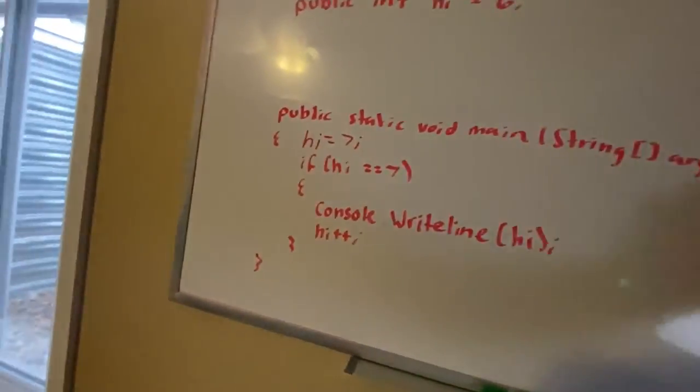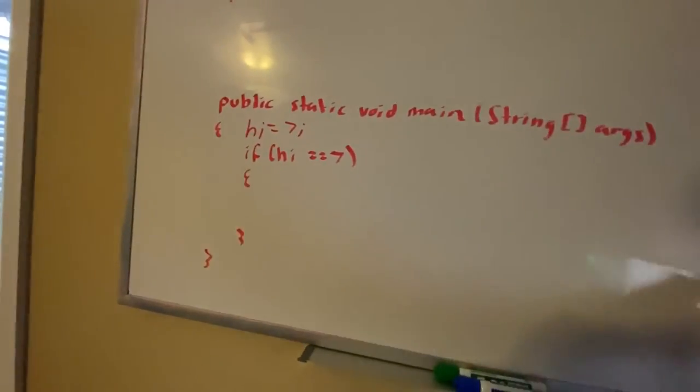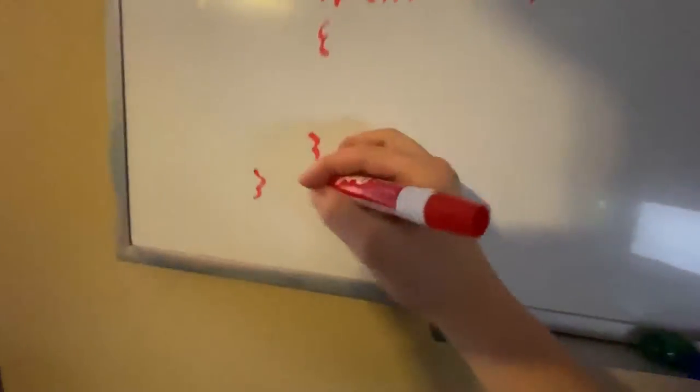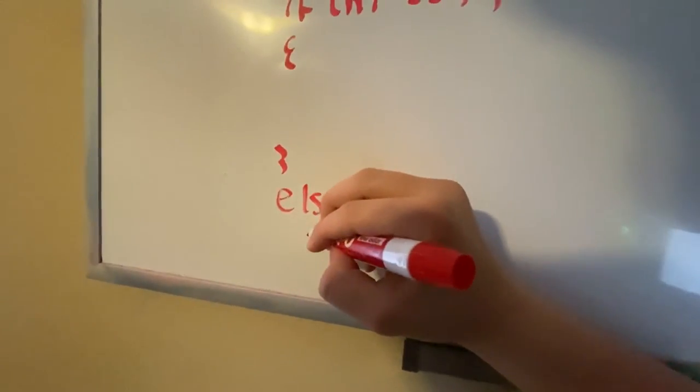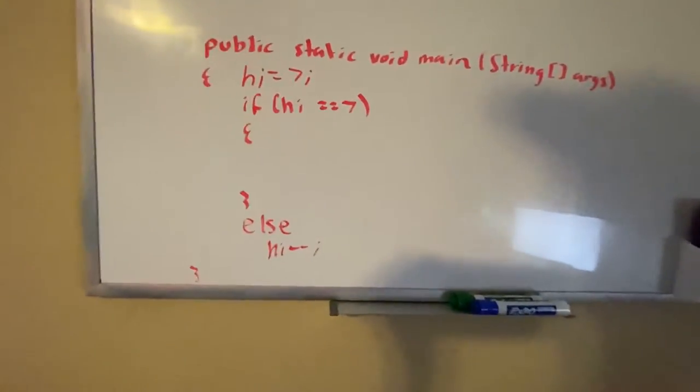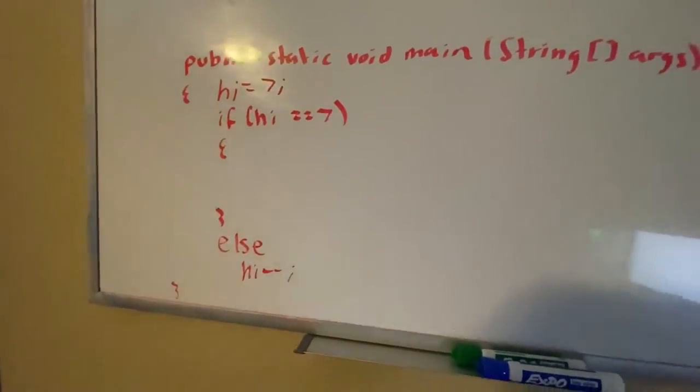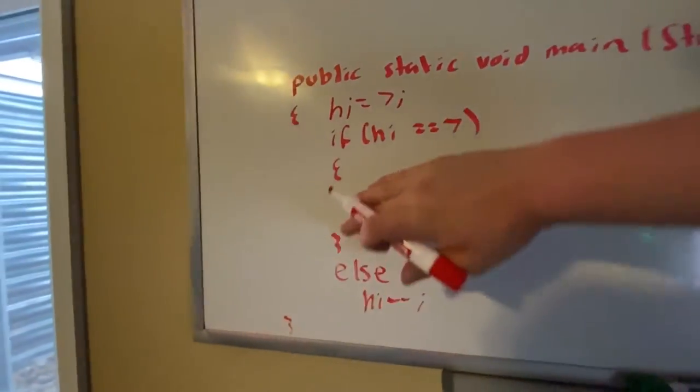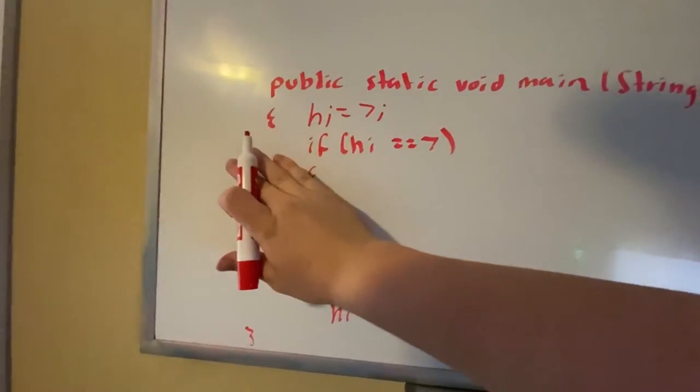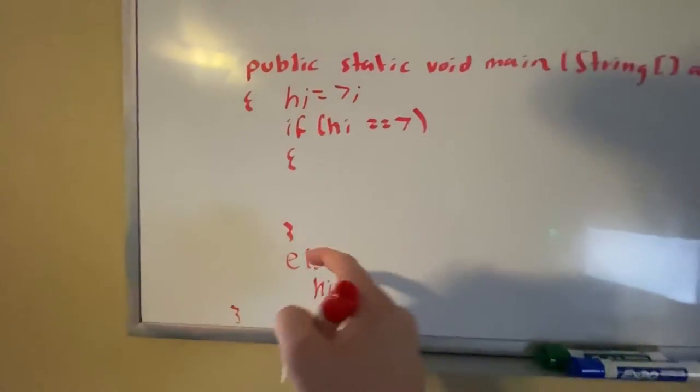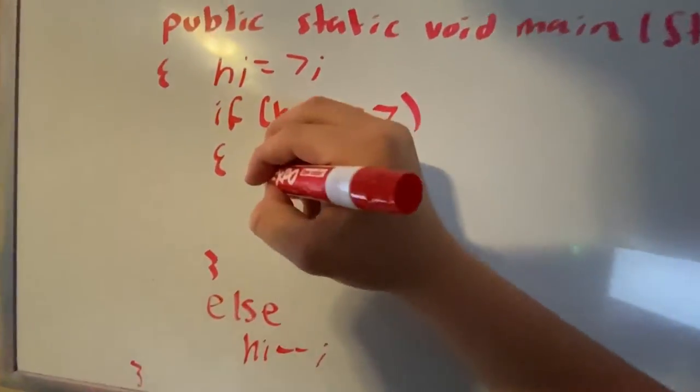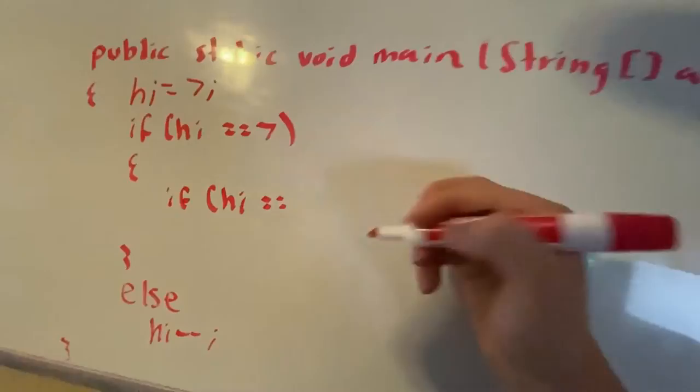Or if you have a separate if else statement in here. If you had an else statement right here, let's say we had else, then we're going to do hi minus minus one for example. If we had another if statement in here without the curly braces, your code will think that this else statement belongs to this if statement. That's why you're going to have to add these curly braces in here.